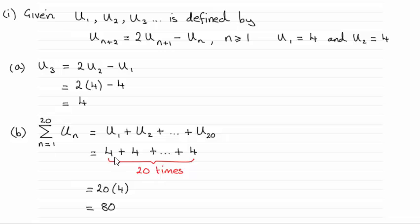So noticing that from here, U1 was 4, U2 was 4, U3 was 4. This was the clue for us that obviously all these terms, all 20 terms, are going to be 4. So I've got 4 twenty times over. So 20 times 4 is 80.